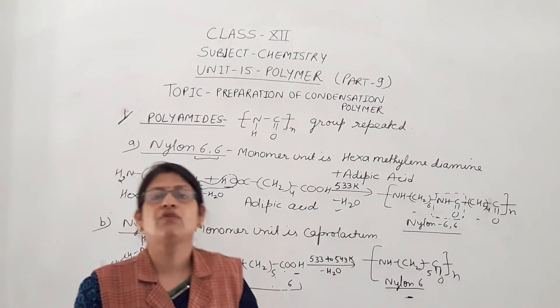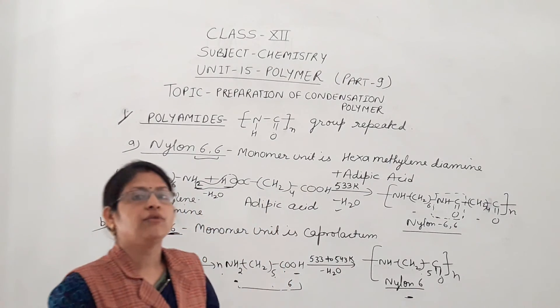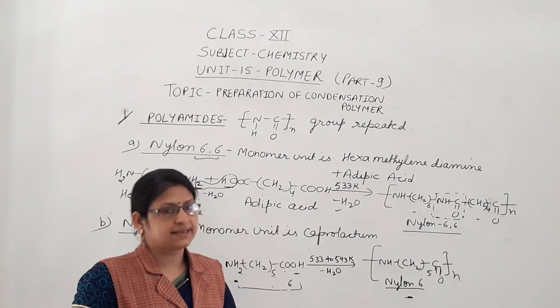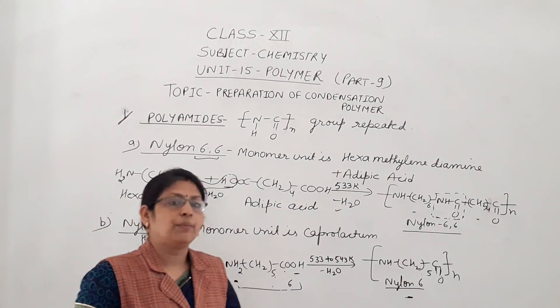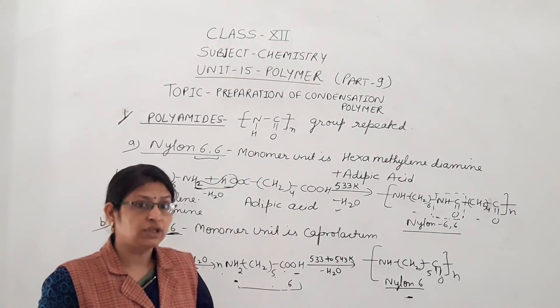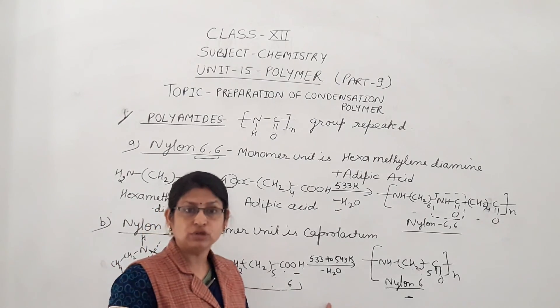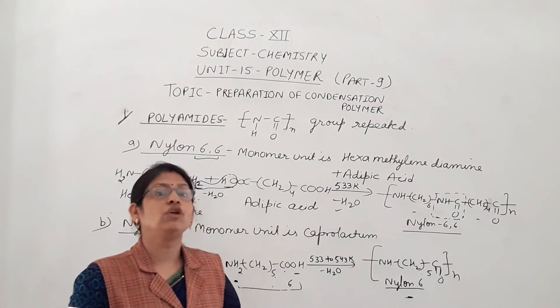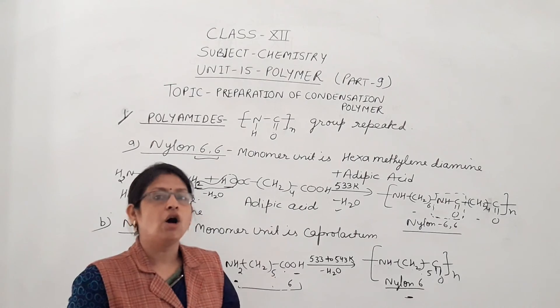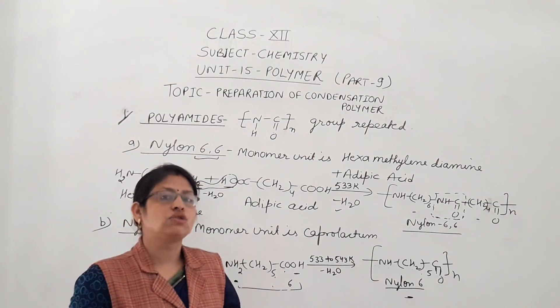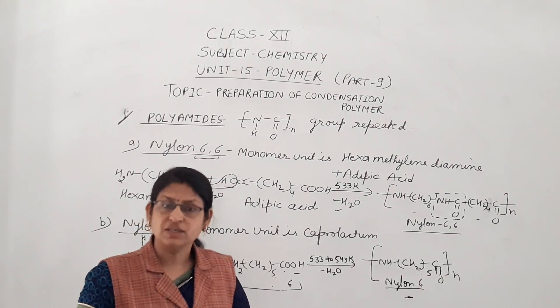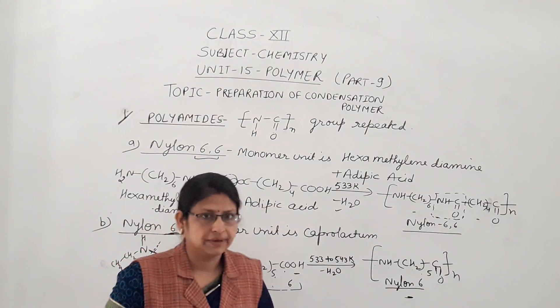Nylon 6 is used for making ropes, fibers, cords, etc. And bearings - bearings are made because intermolecular force is very strong and it is very strong in nature. Tensile strength is very very high. Okay, thank you.